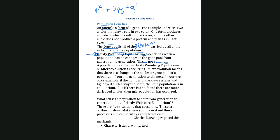In reality, a population staying in Hardy-Weinberg equilibrium is not the norm — it's not common. There's this term, microevolution, and all that means is there is a change in the gene pool from one generation to the next. A population can either be in Hardy-Weinberg equilibrium with no changes in the gene pool, or it can be experiencing microevolution, meaning there are changes in the gene pool.